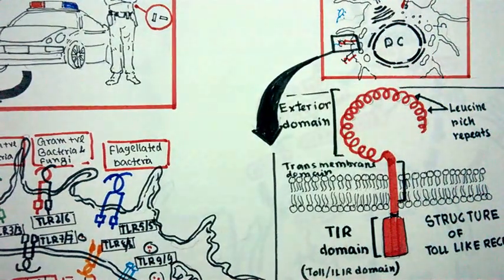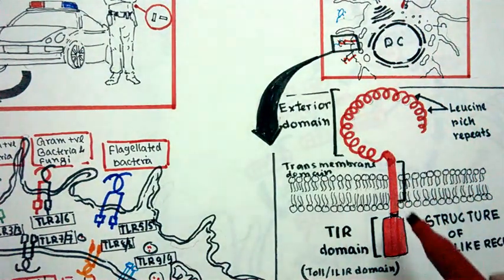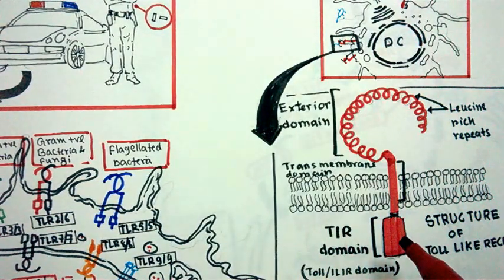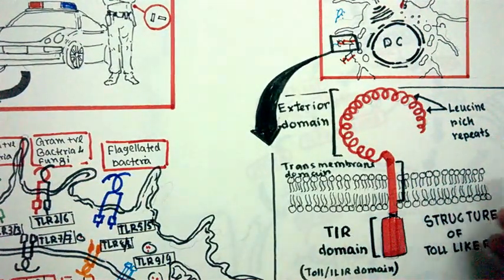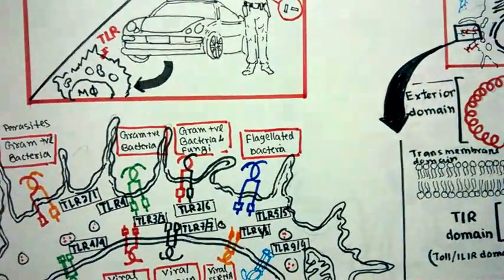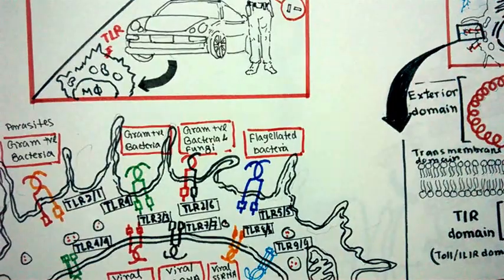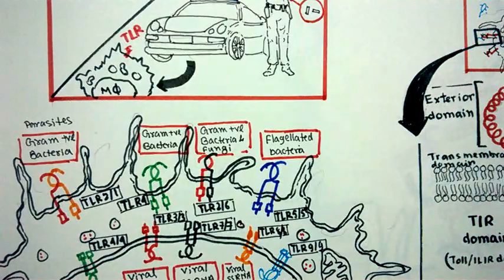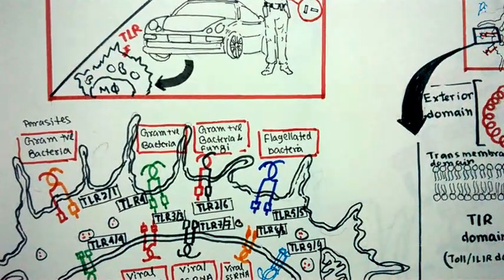If you want to know more about the structural details of TIR domain, please click on the link on the screen. I have a separate video on that. Now we'll look at several types of these pathogen recognition receptors, which tell the dendritic cell what type of pathogen invaded our body.